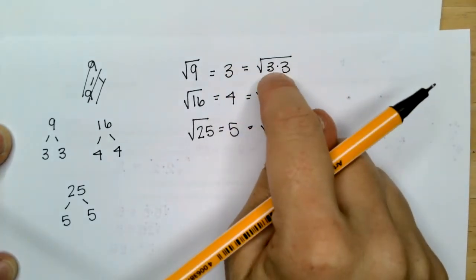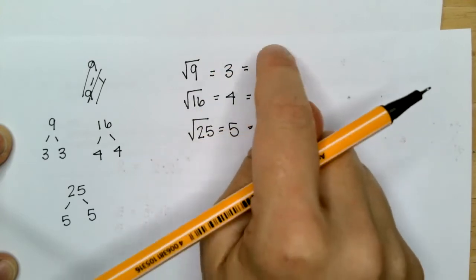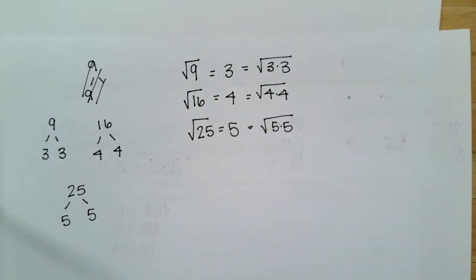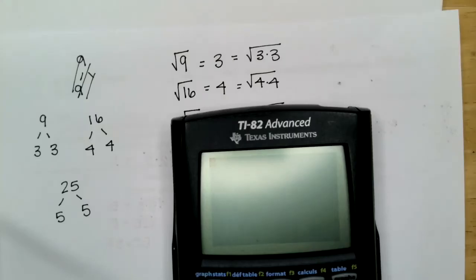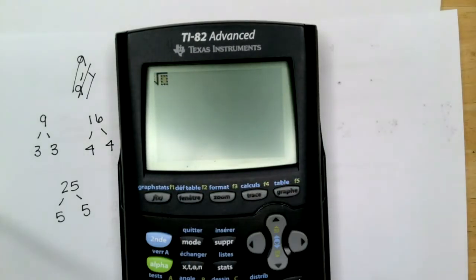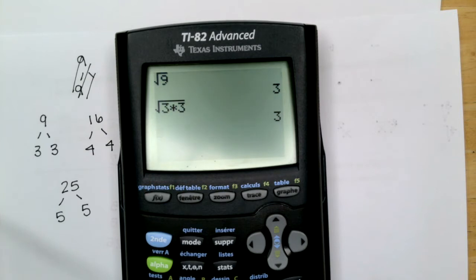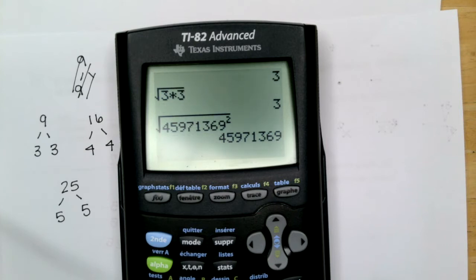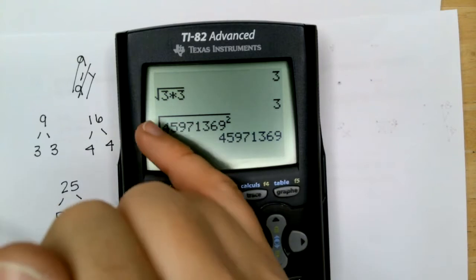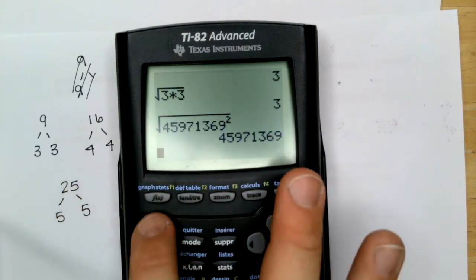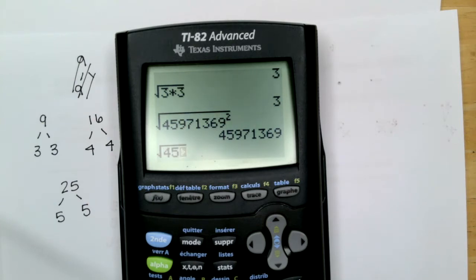Once you have two of the same number under the radical, you can take them out. We can check with a calculator: the square root of 9 is 3, and the square root of 3 times 3 is 3. The square root of any number squared gives you that number back, which proves that squaring and taking the square root undo each other.